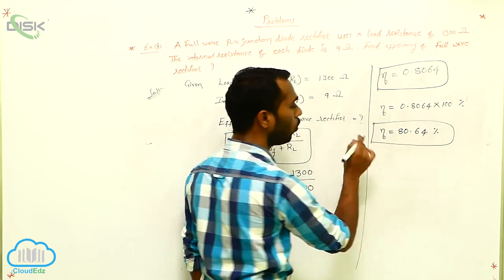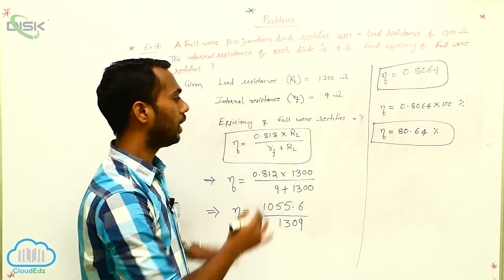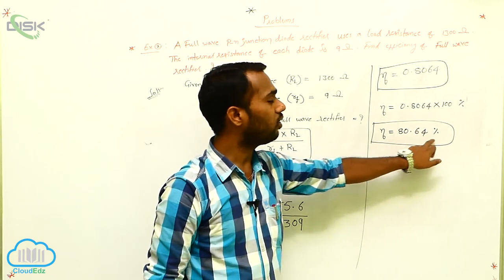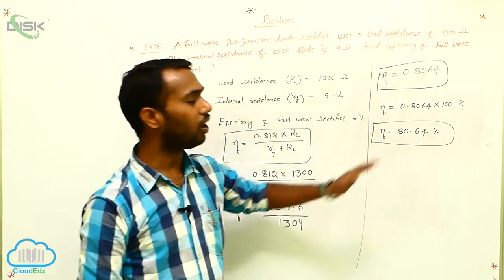Here, this full wave rectifier converting AC current into DC. How much percentage? 80.64 percentage. That is our final answer.